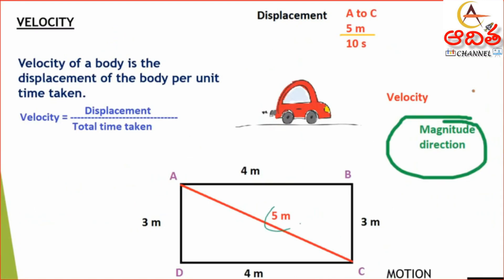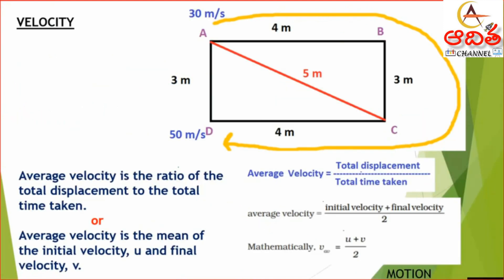For velocity, the displacement from A to C is 5 meters and the time taken is 10 seconds, so velocity is 0.5 meter per second. Velocity has both magnitude and direction, and is defined as the displacement of the body per unit time. For average velocity — taking displacement from A to D as 3 meters and total time as 4 + 6 + 5 = 15 seconds — the average velocity is 0.2 meter per second.